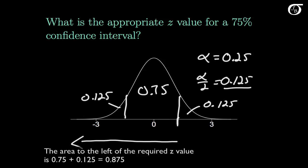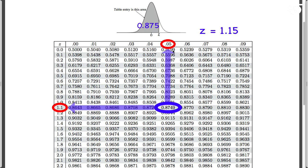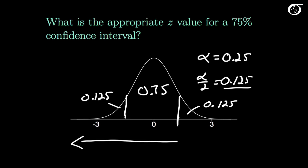Let's go to the table. We want to find the z value that has an area to the left of 0.875. We look in the body of the table and get as close as we can to 0.875 — that's 0.8749 right here. Going to the edges gives us a z value of 1.15. So the table tells us that this value, to two decimal places, is 1.15, and by symmetry about 0 the other value is minus 1.15. Therefore z sub 0.125 is approximately 1.15.